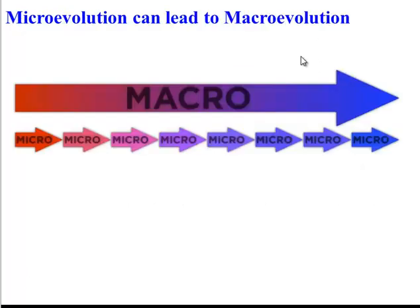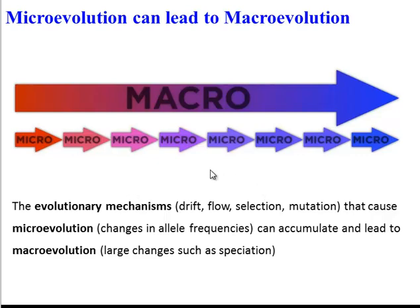To understand a process like speciation, we're going to have to apply the forces of microevolution that we learned about earlier. Essentially, all of those microevolutionary forces can add up to macroevolution, like speciation. Mechanisms like genetic drift, gene flow, natural selection, and mutation cause small-scale changes in allele frequencies — microevolution. If those accumulate over long enough time in a population, it can lead to macroevolution — a big change like the development of a whole new species. So evolution can be small-scale and lead to large-scale.